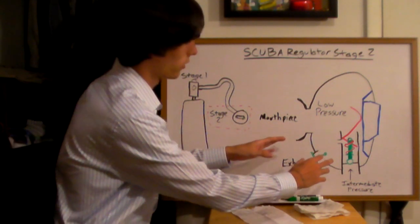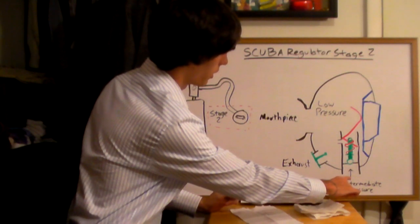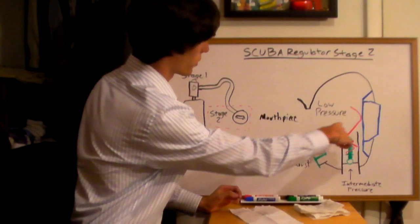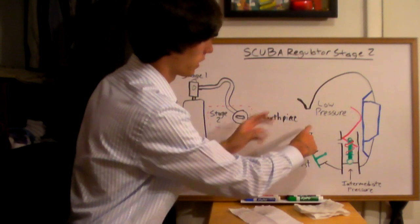Here's how this works. You've got a stopper here blocking the intermediate pressure and you've got a low pressure chamber. And here's your mouthpiece that you'll actually be breathing into.